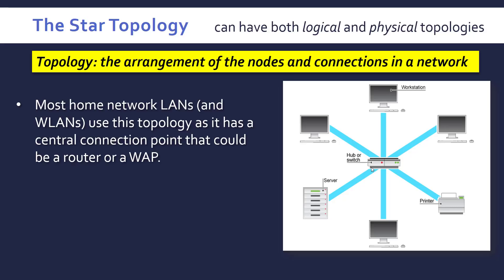Most home local area networks and wireless local area networks use this topology because it has a central connection point, which might be a router, a wireless access point, or in this case a hub or a switch.